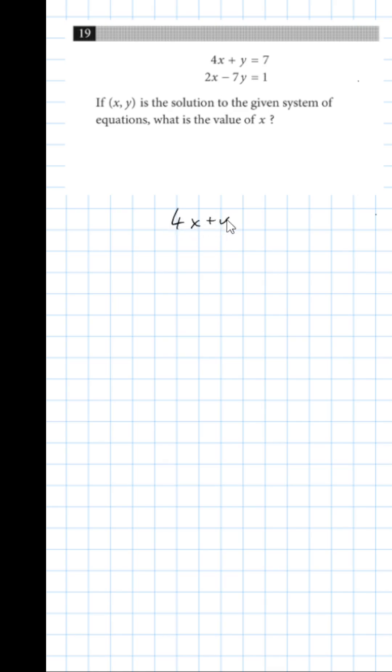So 4x plus y equals 7, 2x minus 7y equals 1.